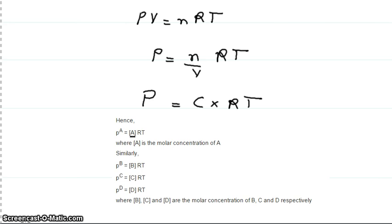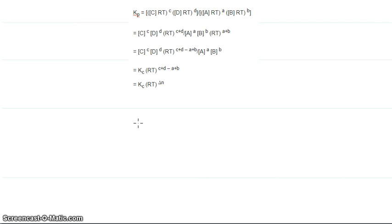So substituting these values, we try to bring it in terms of Kc. So here we get, in this step, we will find we are getting C raised to C, D raised to D, A raised to A, B raised to B. And then we substitute this value of Kc here, and additionally we have RT raised to this thing.